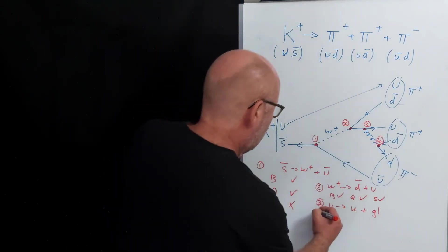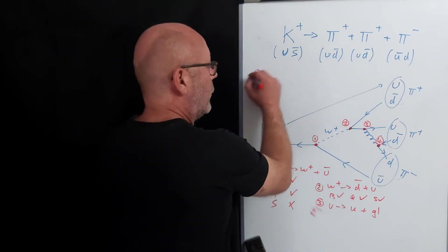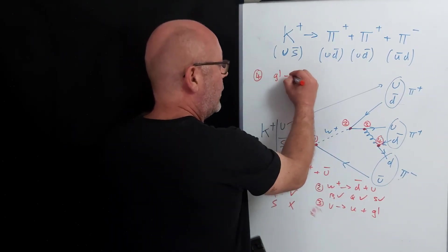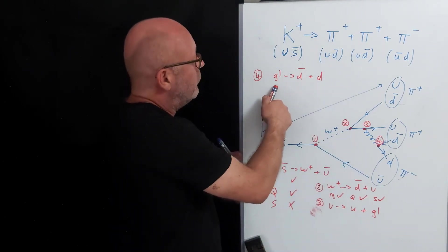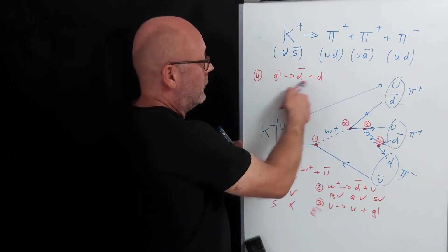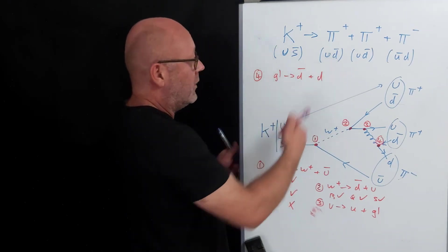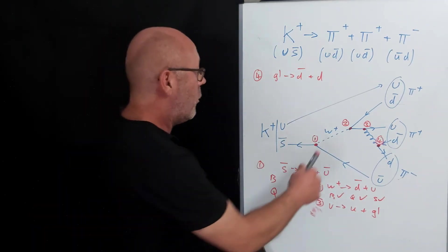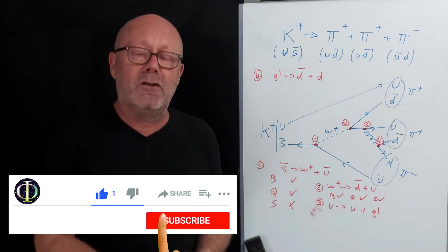Four. The gluon, I'll just write it here. Four. The gluon becomes an anti-down plus a down. Baryon number, zero. Here, zero. Charge cancels, so it's still zero. Lepton number, there's no leptons, and strangeness, there's no strange quarks. So all these vertices satisfy the rule of conservation of quantum numbers.